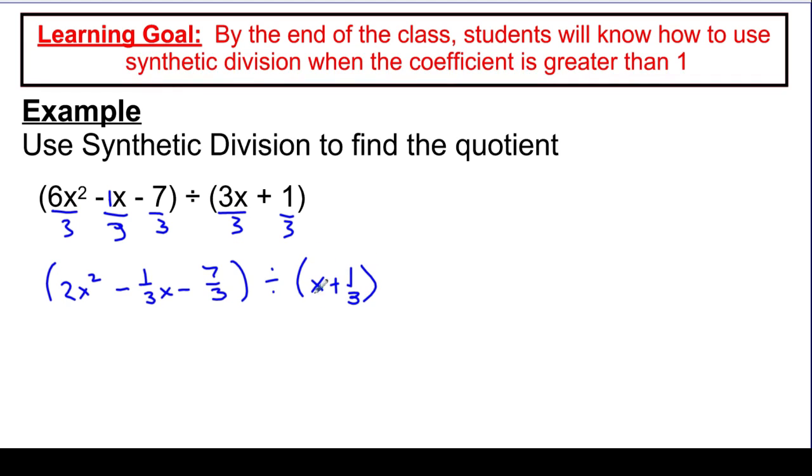So again, what you're going to ask yourself is what value of x would make that turn into 0? Or if I solve this set equal to 0, what would it come out? And the answer is negative 1/3. So that's going to be my number on the outside. And we're going to bring down our coefficients. 2, negative 1/3, and negative 7/3, okay?